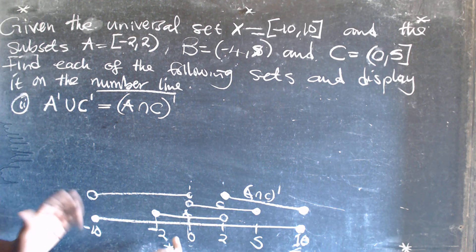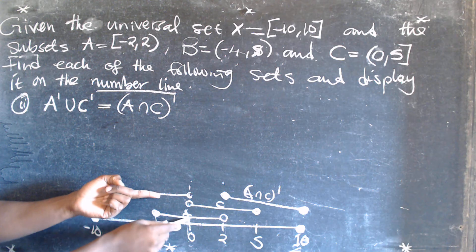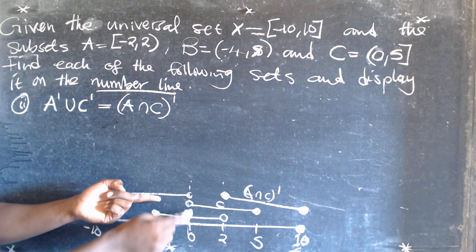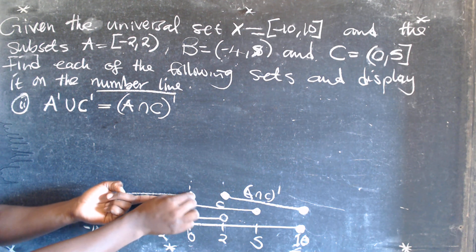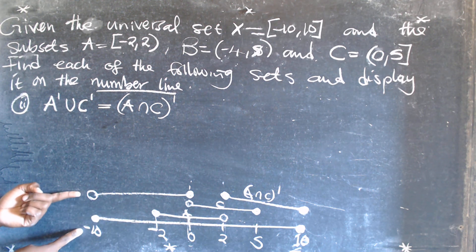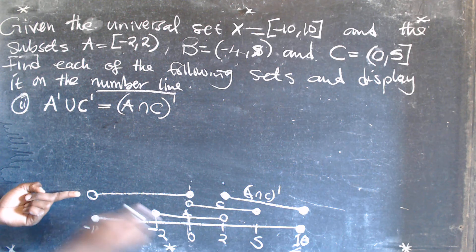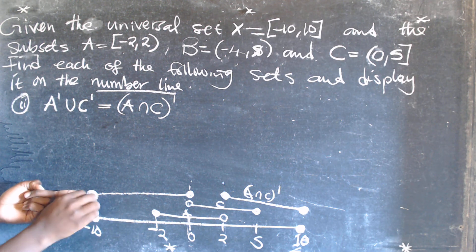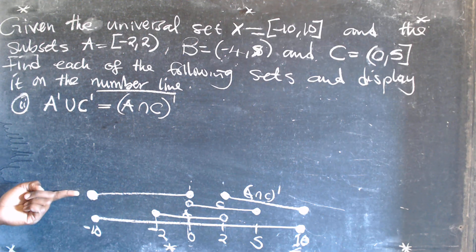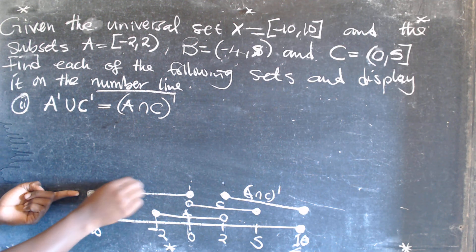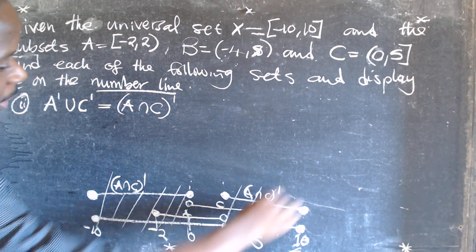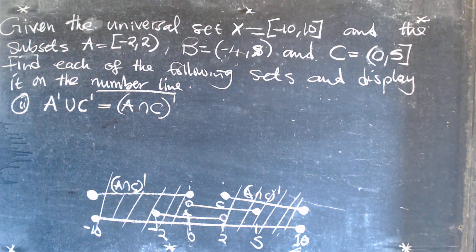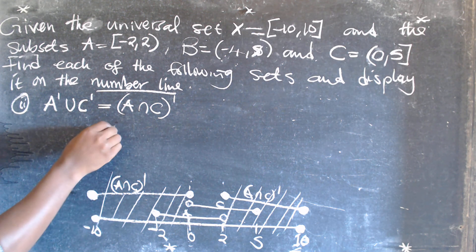The other side: zero is in set A but it is not in set C, which means it is not in the intersection. If it is not in the intersection, it means it is outside the intersection, which is A intersection C complement. This negative 10 is not in the intersection, so we shade to show it is also outside the intersection of A and C. So this is A intersection C complement shown on the number line.